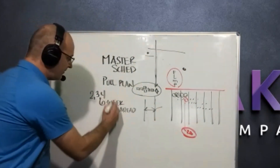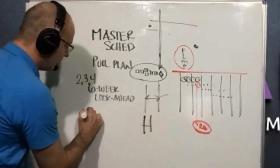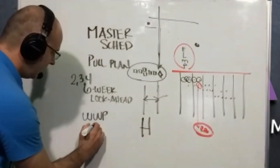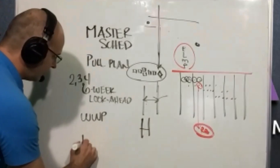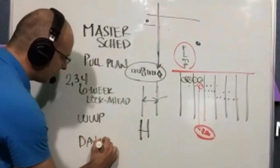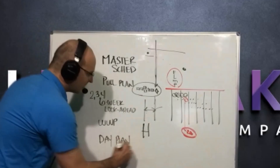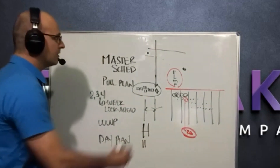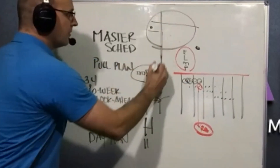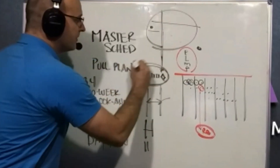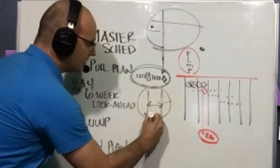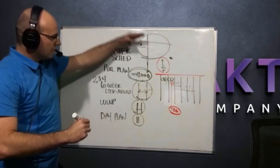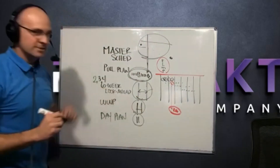From there, you'll filter out a weekly work plan — WWP — and then create your day plan as part of the TACT and Last Planner system. So you're going from the overall macro, to confirming that with your trade partners, down to your look-ahead, to your weekly work plan, to your day plan.